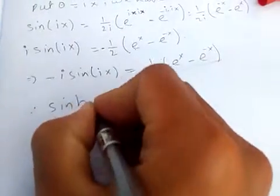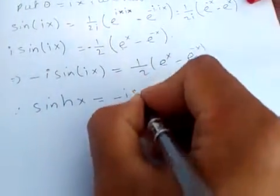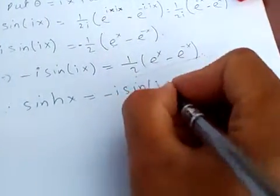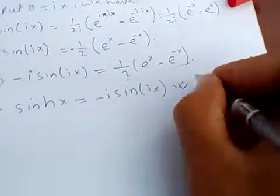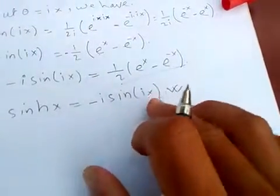Therefore, sinh(x) = -i·sin(ix). This is the relation between hyperbolic and normal trigonometry.